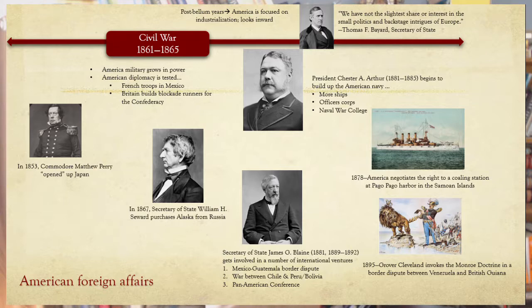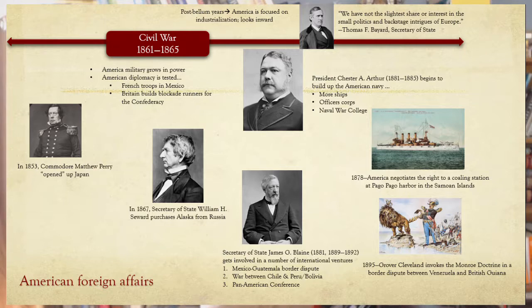Secretary of State James G. Blaine got involved in a number of international ventures. President Chester Arthur began to build up the American Navy — more ships, a better officer corps, and started a naval war college. In the 1870s, America negotiated rights to coaling stations in the Samoan Islands. In 1895, Grover Cleveland invoked the Monroe Doctrine in a border dispute between Venezuela and the British. As Secretary of State Thomas F. Bayard said, 'We have not the slightest share or interest in the small politics and backstage intrigues of Europe.'